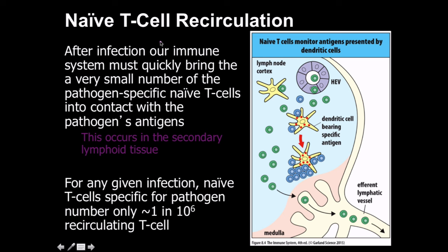Let's talk about actual naive T-cell recirculation. After infection occurs, our immune system must quickly bring the very small number of pathogen-specific naive T-cells into contact with the pathogen's antigen. That's actually really complicated to do because there are so many T-cells being produced, and we must be able to find a way to produce a lot of them that are specific for that pathogen in a very small area of space.